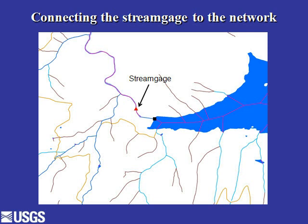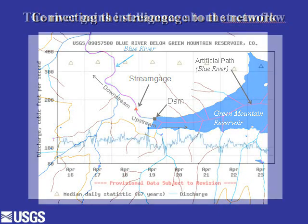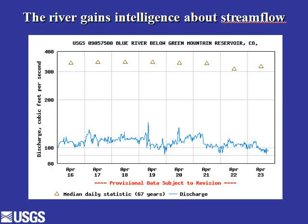A stream gauge on the network makes the stream network more intelligent because it tells us how much water is in the river. Likewise, the network makes the stream gauge more intelligent — we know what's downstream, what's upstream, the name of the stream, and that there's a dam upstream impounding Green Mountain Reservoir. Further upstream, there's another reservoir with a diversion of 300 cubic feet per second out of the stream system. We know miles of perennial, intermittent, and ephemeral stream, the drainage area, and even a heavy metals tailings pond upstream. All this information on the network makes the stream gauge more intelligent, and the gauge tells us how much water is in the stream via a hydrograph.